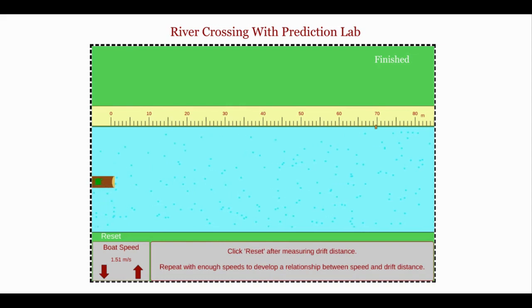This looks like it landed somewhere around 69.9. Make sure that the lowest speed does make the other side. Sometimes when you open up this sim, the boat actually goes off screen. If that's the case, just hit reset and then increase the speed a little bit.